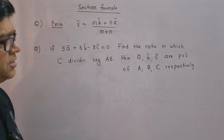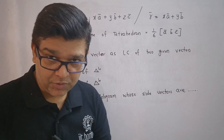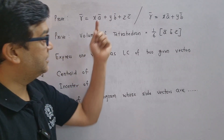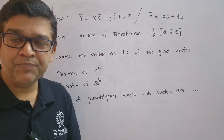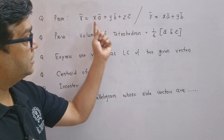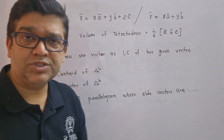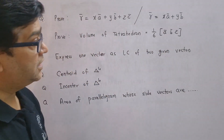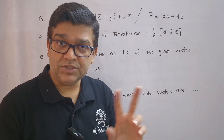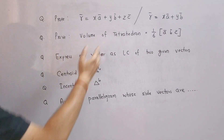A smaller question type is: if 5a-bar + 3b-bar − 8c-bar = 0, find the ratio in which point C divides segment AB, where a-bar, b-bar, c-bar are the position vectors of points A, B, C respectively. There are also theoretical questions such as: if a-bar, b-bar, c-bar are non-zero non-coplanar vectors, any vector r-bar can be expressed as a linear combination of a-bar, b-bar, c-bar.